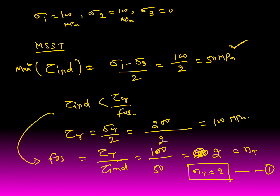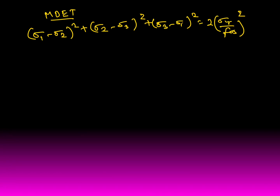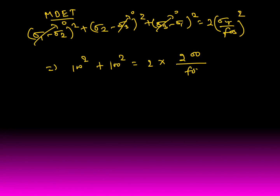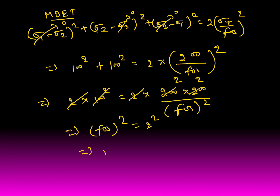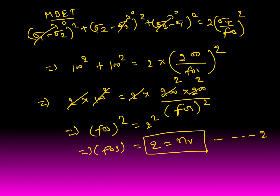For Von Mises theory: since σ1 = σ2 = 100 MPa, the term (σ1−σ2)² = 0. Substituting: 0 + (100)² + (100)² = 2×(200/FOS)². This gives 2×(100)² = 2×(200/FOS)², so FOS² = 4, and FOS = 2. Therefore Nb = 2.